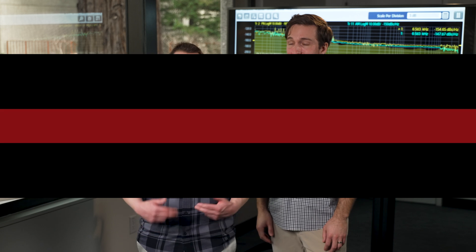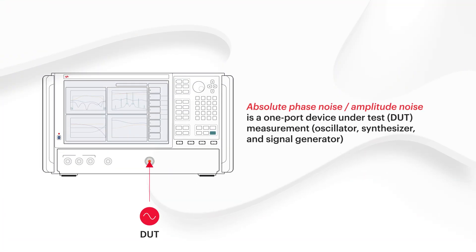Today we're going to show off three of these measurement capabilities. First we're going to measure absolute phase noise. This is the measurement of a one-port device like a signal generator, a synthesizer, or an OCXO. David will show off the absolute phase noise of our highest performance vector signal generator, the M9484C VXG.